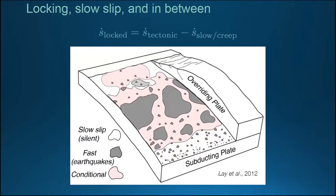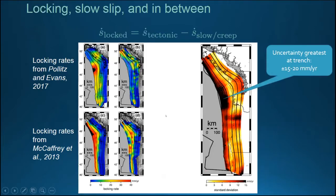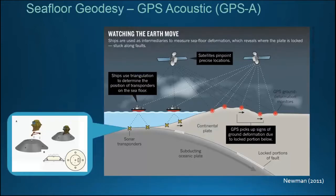Subduction zones — interesting things happen in them. If you want to find out about a subduction zone, you need to figure out the tectonic rate and also what rate is sticking on it. When we go out and try to do that, we get many different coupling models with very large uncertainties, which is going to be a hint that what we need is probably actual observations. Let me put in a few slides to explain how the geodesy works.